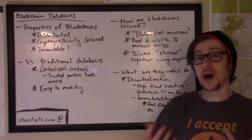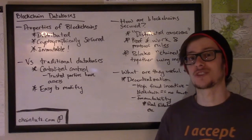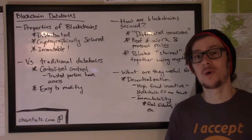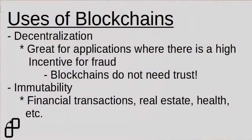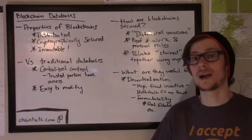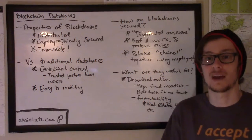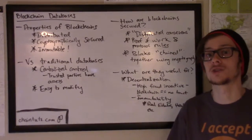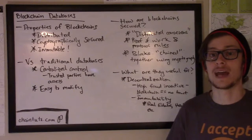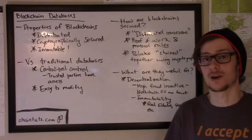This blockchain concept can actually have some really interesting applications in the future when it comes to other sectors. For example, real estate — it's been proposed that blockchains could be used to track the transfer of real estate over time between different owners, rather than having a county or statewide database where a central record keeper has to be trusted to maintain this information. As well, it could be used for things like medical records, where it's critical that records are maintained for patient safety and insurance purposes.